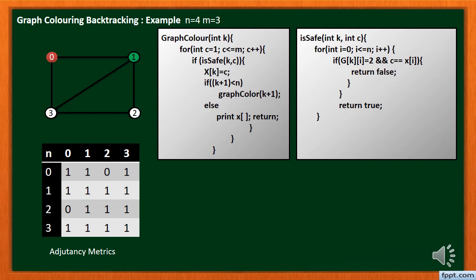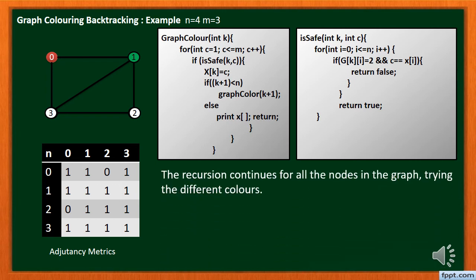Then the recursion continues for all nodes in the graph, trying different colors. If no color is safe and not all nodes are filled, it will backtrack and try a different color on the last node set or at the end of the node.